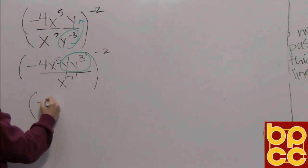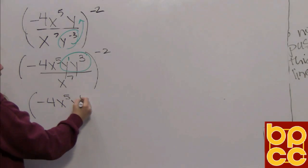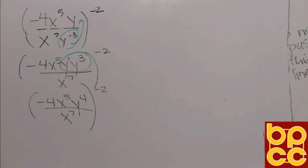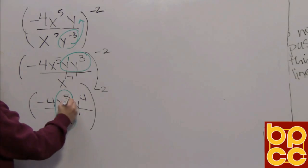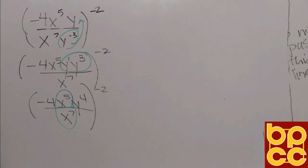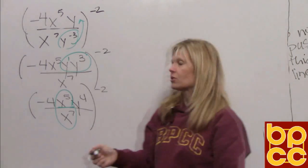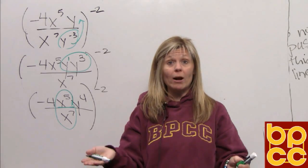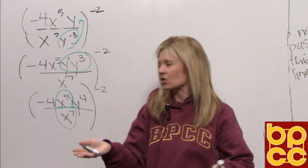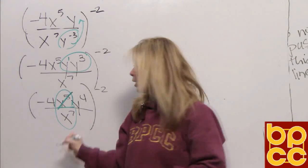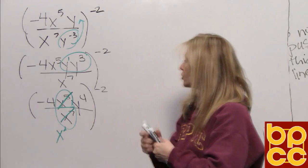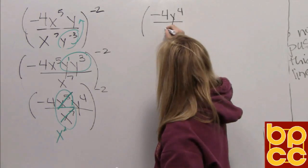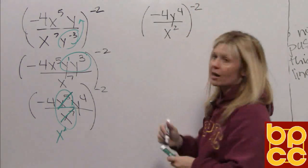So now our expression would be negative 4 x to the fifth y to the fourth over x to the seventh all to the negative two. But I'm not done working on the inside. I also have x's and they are connected by the division bar. So we've already learned when you divide variables you subtract exponents. We've already discussed this. When you're subtracting five and seven which would be two you put that x squared, that x with the two exponent where there were more x's. So if you take these five away they're gone. You take five from seven and you're left with two. So now we have in the numerator negative four, a y to the fourth. In the denominator we have an x squared but it's still to the negative two exponent. So we're not done.